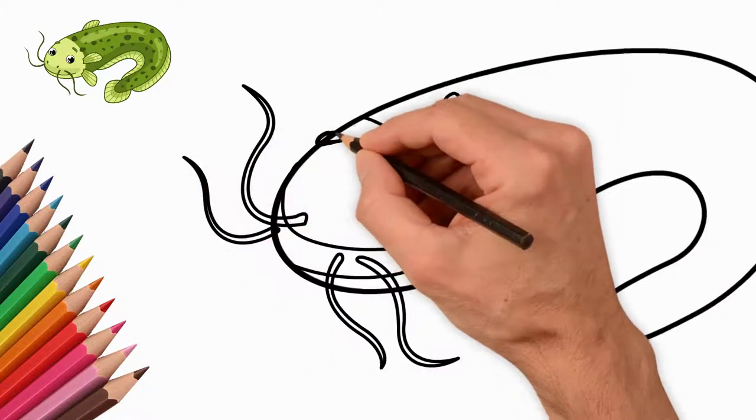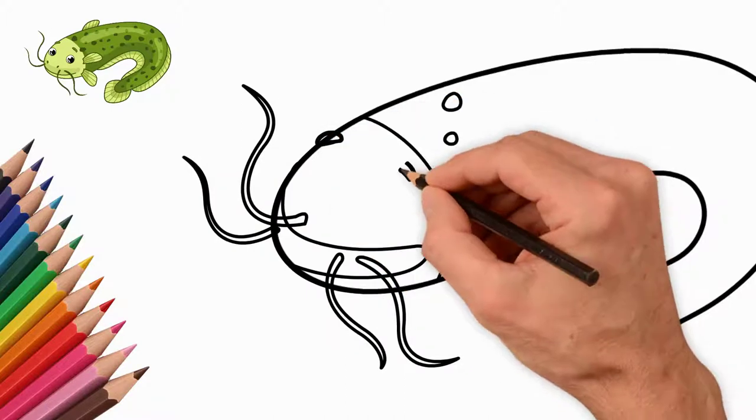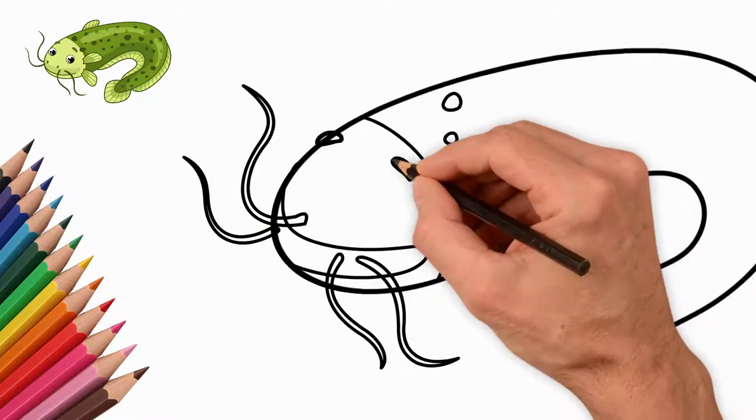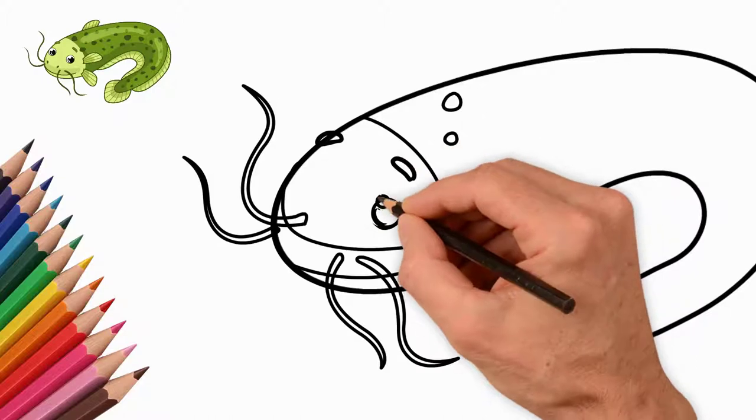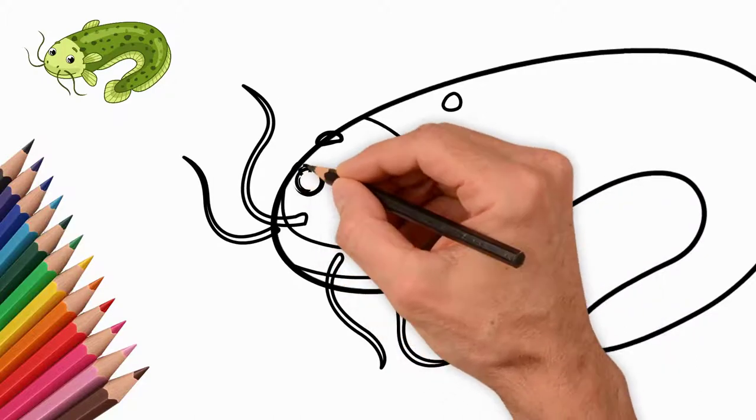Draw a catfish head. The catfish has a mustache. We draw a big mustache. Two mustaches on each side. Draw four mustaches.